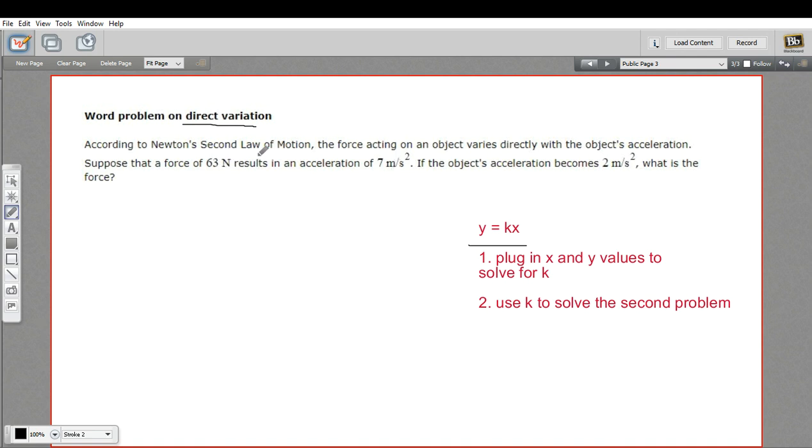It says according to Newton's second law of motion, the force acting on an object varies directly with the object's acceleration. So the force varies directly with the acceleration. Force is where y is in our equation, y varies directly with x. So force varies directly with acceleration, so that's our x.